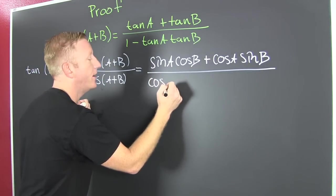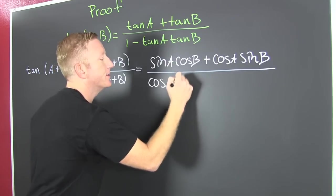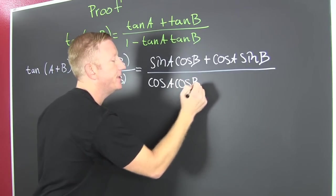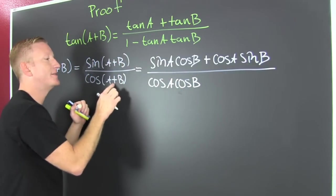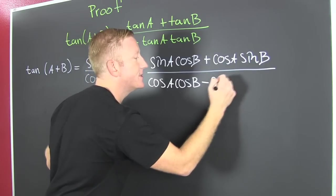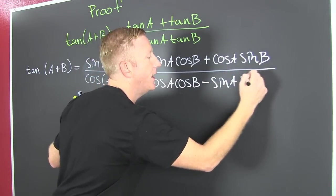And then that's going to be all over this guy's cos cos, sine sine. So that's the cosine of A, the cosine of B. Now these are the same so the signs are opposite. So that's going to be minus the sine of A, the sine of B.